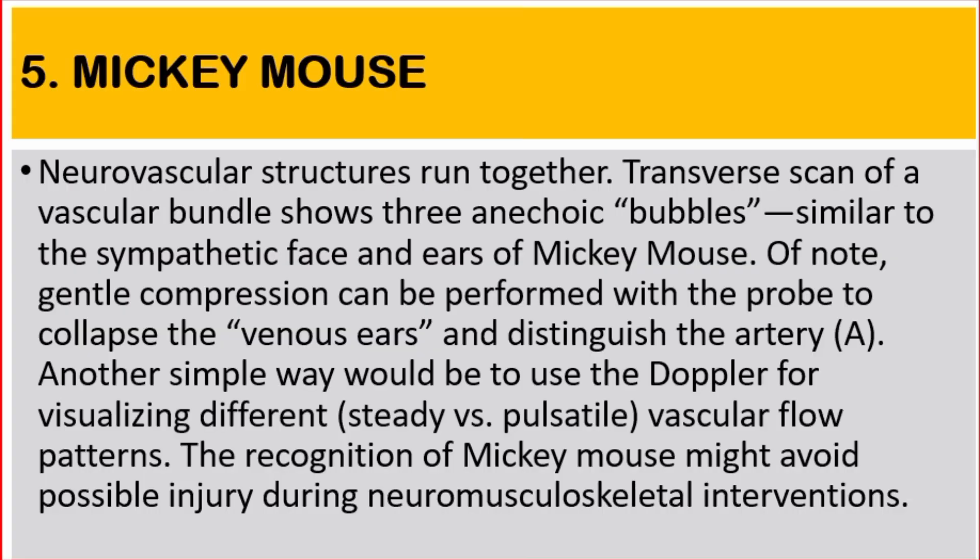Number five: Mickey Mouse. Neurovascular structures run together. Transverse scan of a vascular bundle shows three anechoic bubbles similar to the sympathetic face and ears of Mickey Mouse. Of note, gentle compression can be performed with the probe to collapse the venous ears and distinguish the artery. Another simple way would be to use Doppler for visualizing different steady versus pulsatile vascular flow patterns. The recognition of Mickey Mouse might avoid possible injury during musculoskeletal interventions.